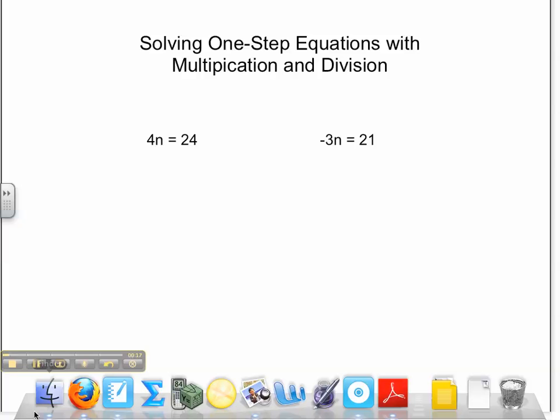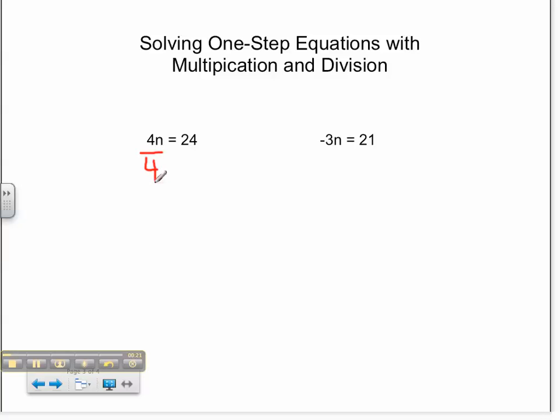For our first problem we have 4n equals 24. We divide both sides: 4 divided by 4 and 24 divided by 4. We know that 4 times 6 equals 24, so n equals 6.